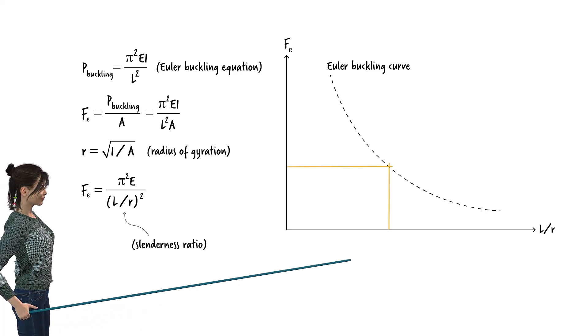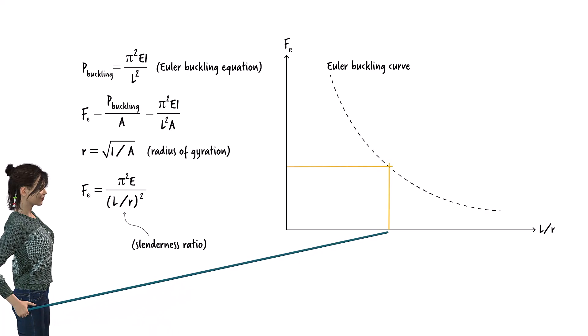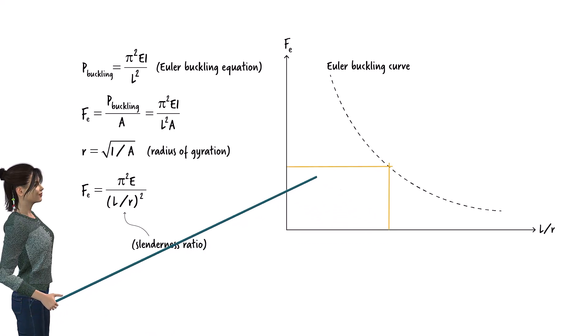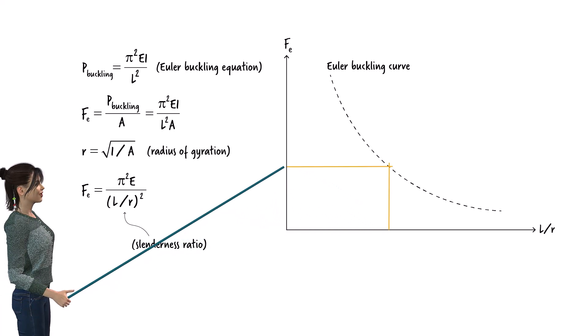For example, at this slenderness ratio, the member buckles when the compressive stress reaches this value.